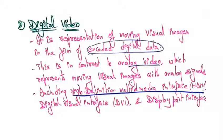Digital video is representation of moving visual images in the form of encoded digital data, in contrast to analog video which represents moving visual images with analog signals. Digital interfaces include HDMI (High Definition Multimedia Interface), DVI (Digital Visual Interface), and DisplayPort interface.